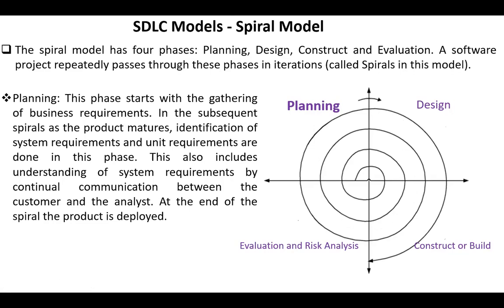The planning phase starts with the gathering of business requirements. In the subsequent spirals, as the product matures, identification of system requirements and unit requirements are done in this phase. This also includes understanding of system requirements by continual communication between the customer and the analyst. At the end of the spiral, the product is deployed.